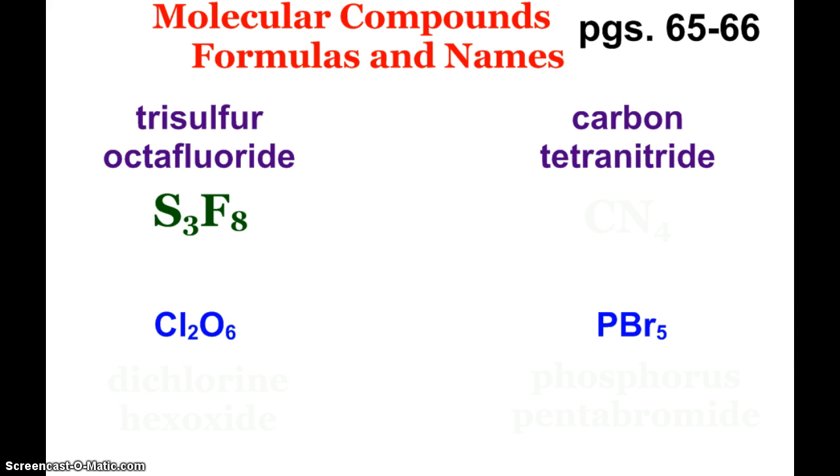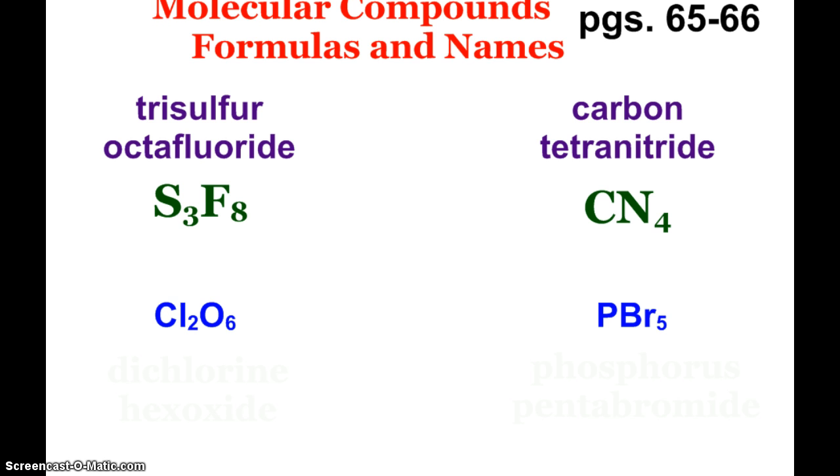Carbon tetranitride, if there's only one atom of the element at the beginning of the name, then we don't have to put mono in front of it. So carbon tetranitride is CN4, it's not monocarbon tetranitride. So you can easily go the opposite way too. So if I have Cl2O6, the name of that molecular compound, two chlorines, so I'll use dichlorine, and then six oxygens, hexoxide. So, yes, oftentimes we use hexa, but I wouldn't say hexaoxide, I just say hexoxide.